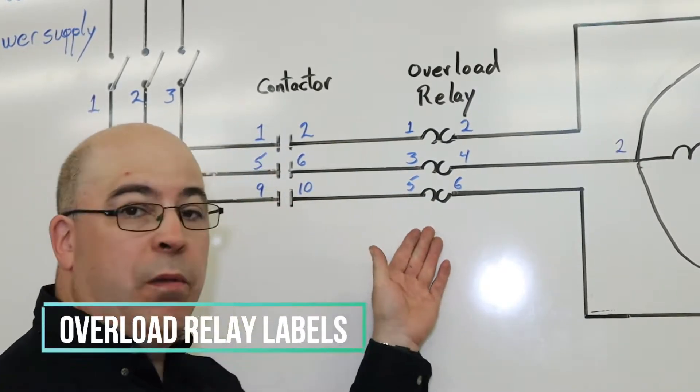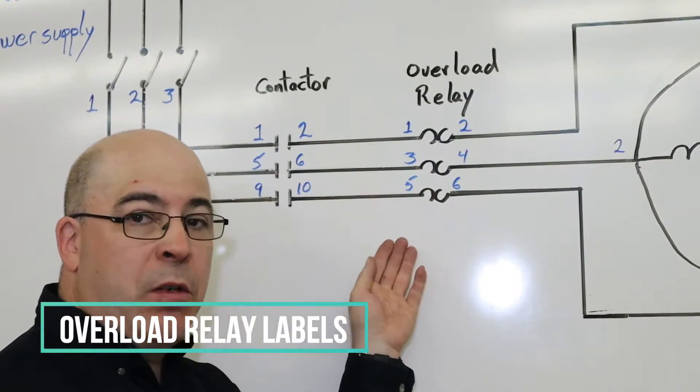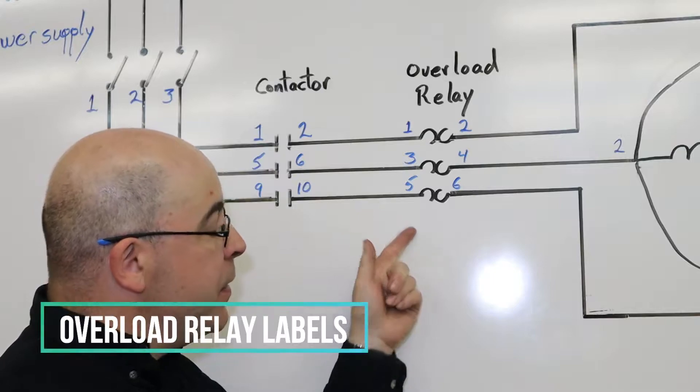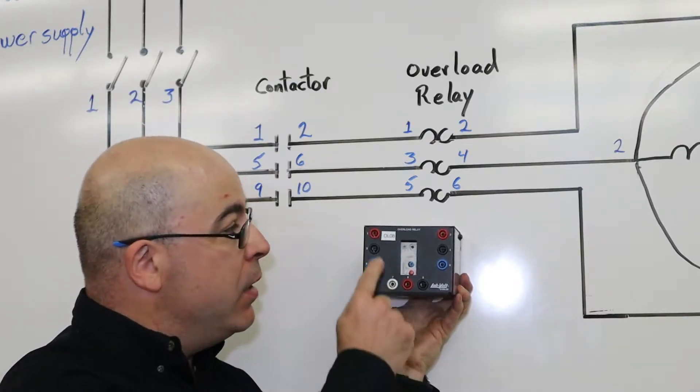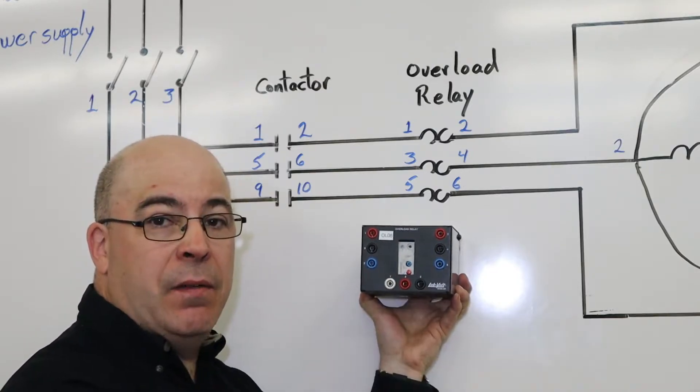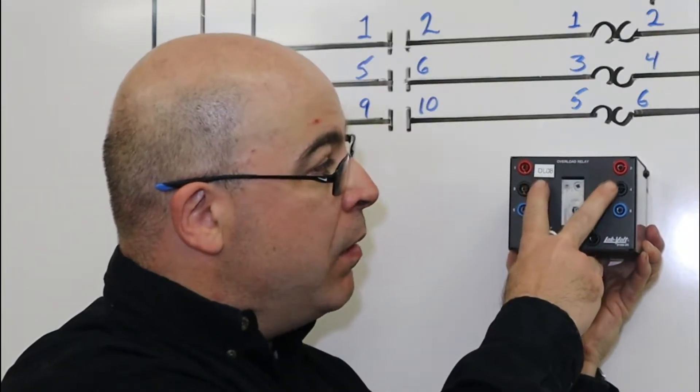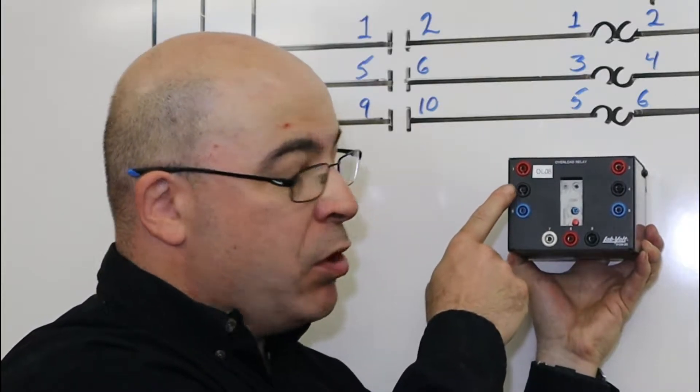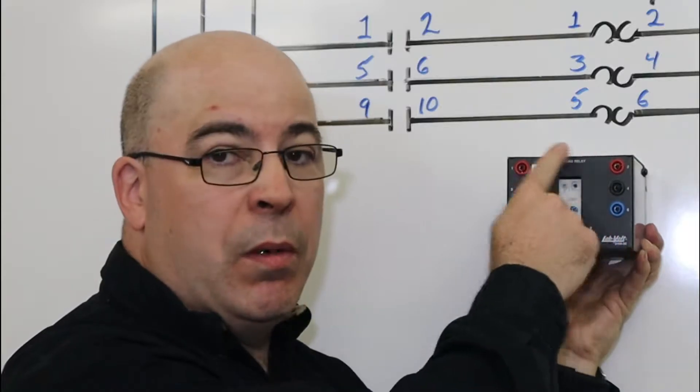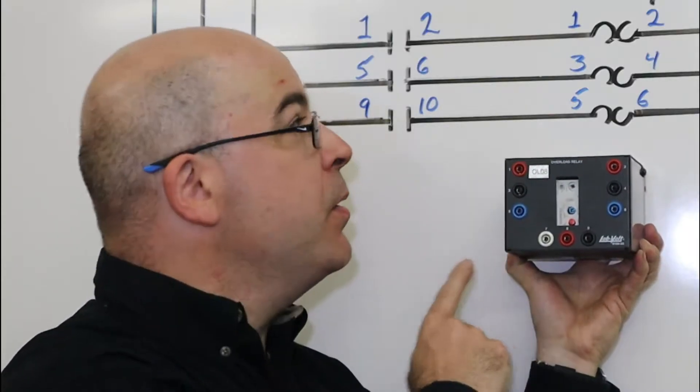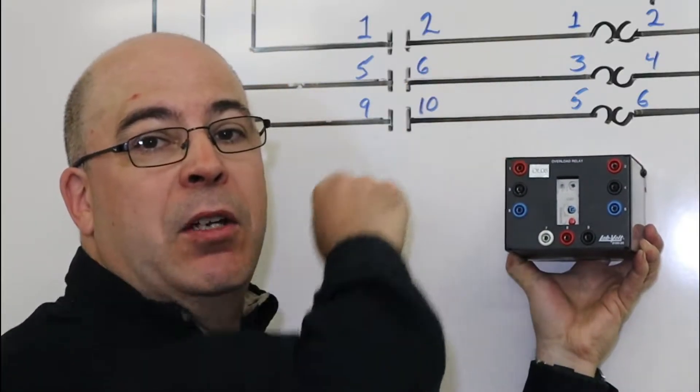The same could be said for the overload relay. The numbers represented on each of the three phases are the contact points that a student would find on the device. What's nice about the overload relay is that these contacts are color-coded. So one and two represents one set of overload heaters, which is represented up here in our diagram.